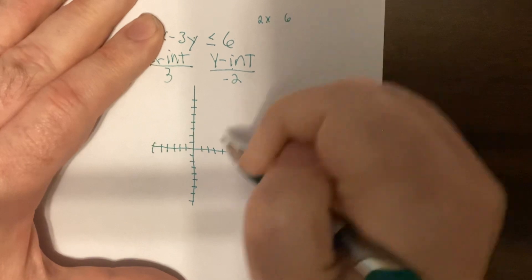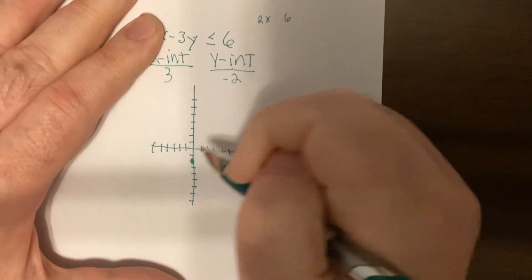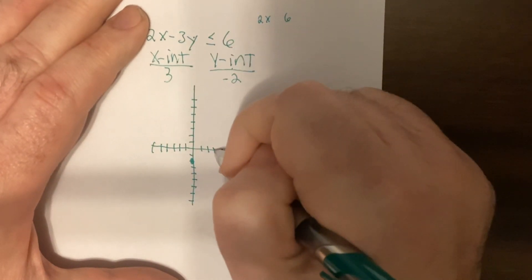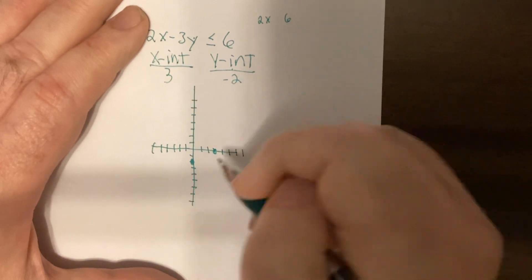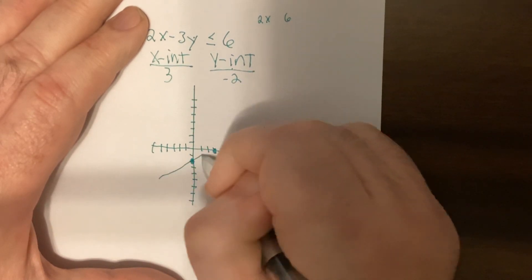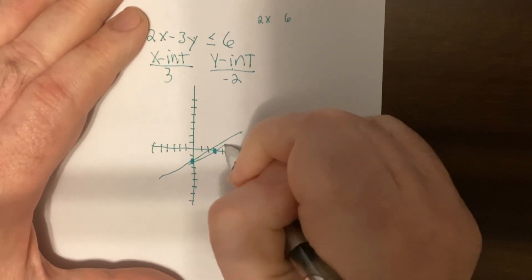Well, negative two. So I'd put a dot at negative two. Put a dot at three on the x-axis. That's the x-intercept. It's equal, so it's a solid line.